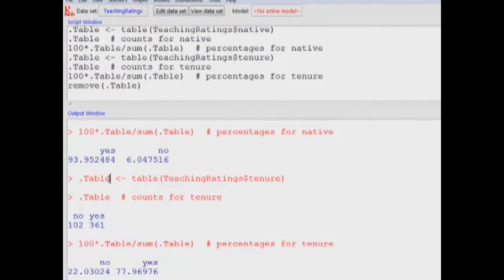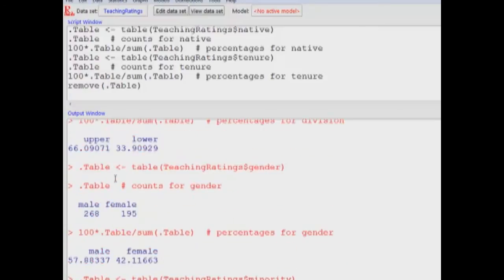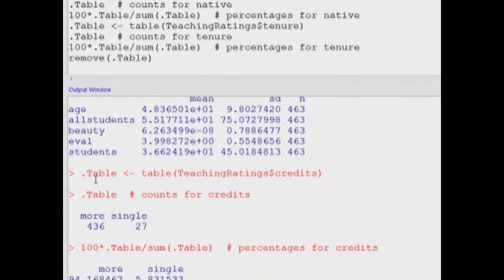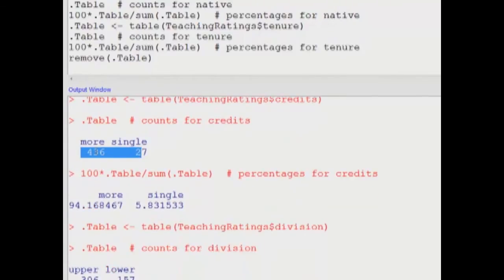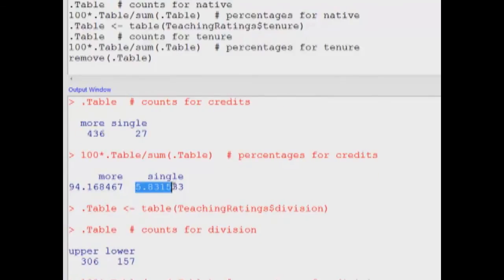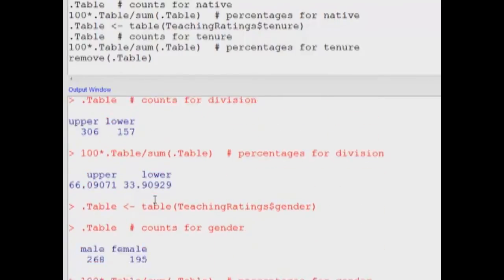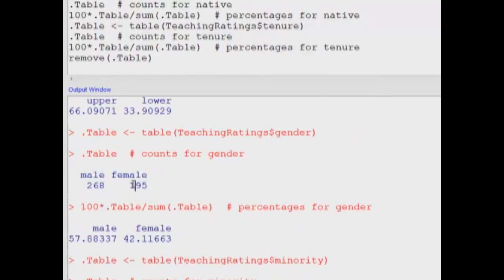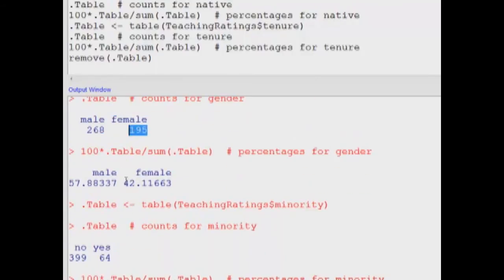Here's the output, and I scroll up, and same as we saw earlier. Single credit course is 27, more credit course is 436, and here it's 5.8%, 27 out of 463 is 5.8. Same is the case with gender: 195 female instructors, which equals 42.11.